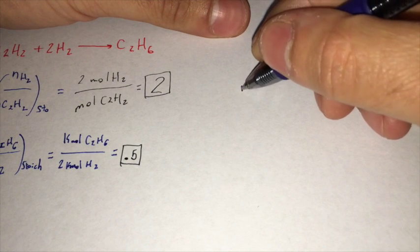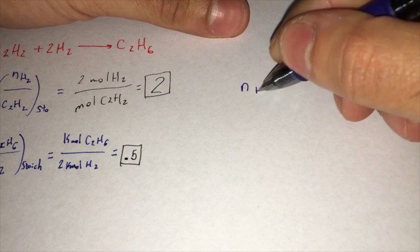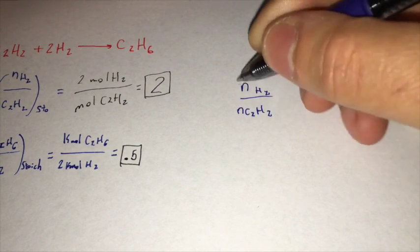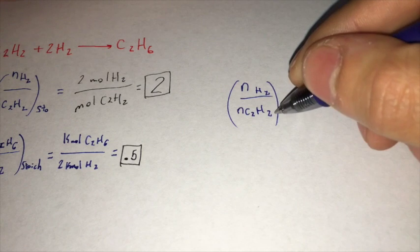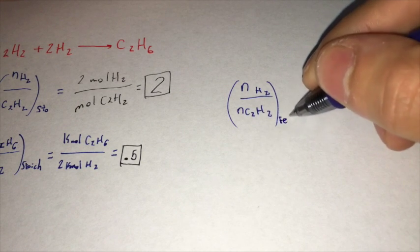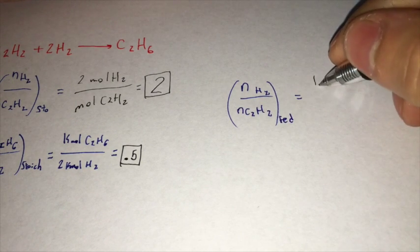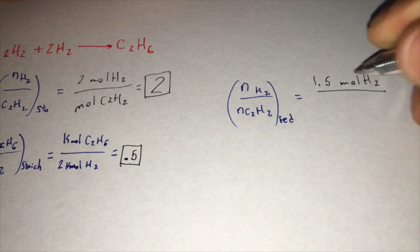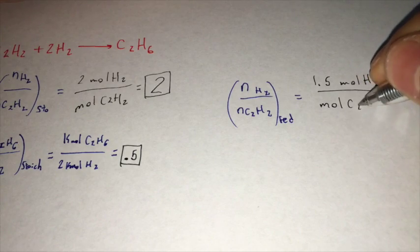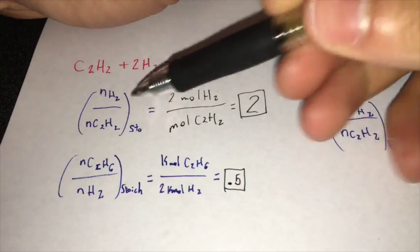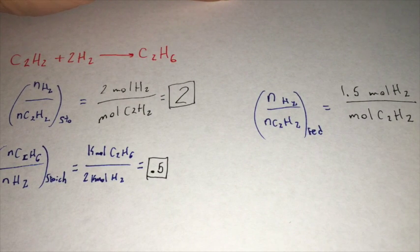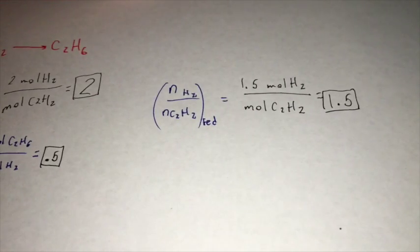Our mole ratio, N of H2 over N of C2H2 that are fed, is 1.5 moles of H2 over one mole of C2H2, and that's equal to 1.5.